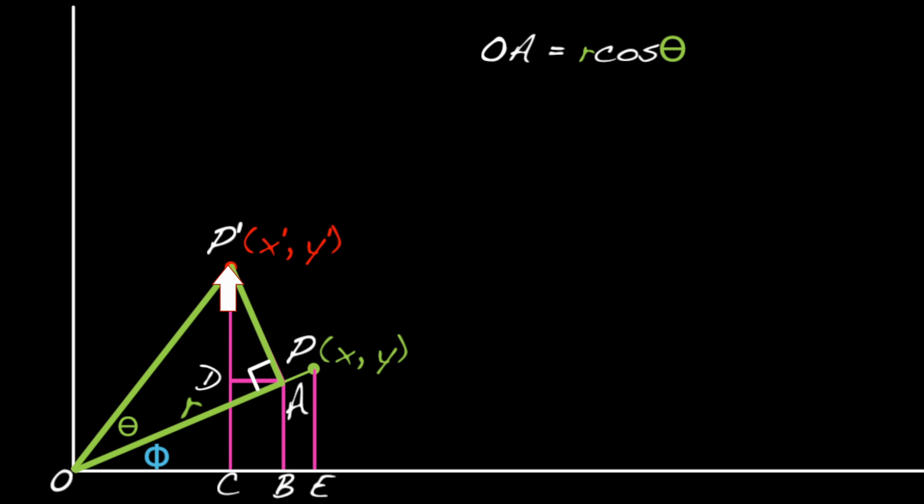Similarly, AP prime equals r sine theta. Good. So we need to show that angle DP prime A is phi. That's because there are similar triangles lurking in there.